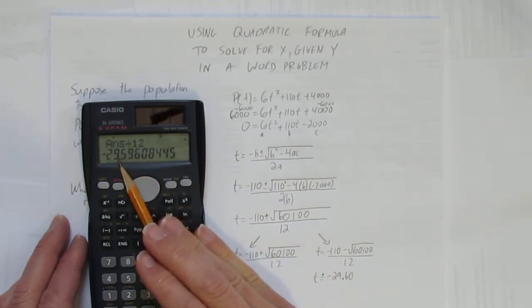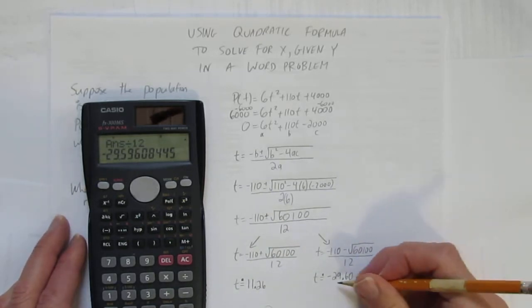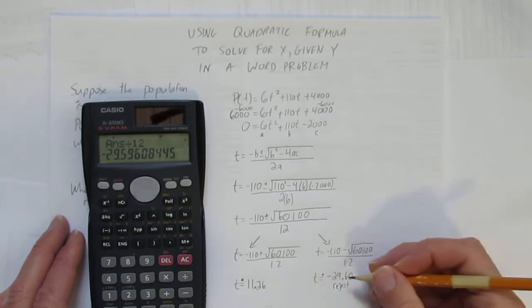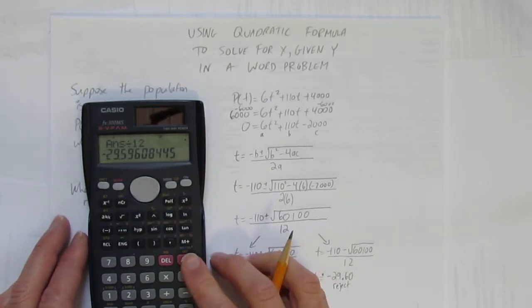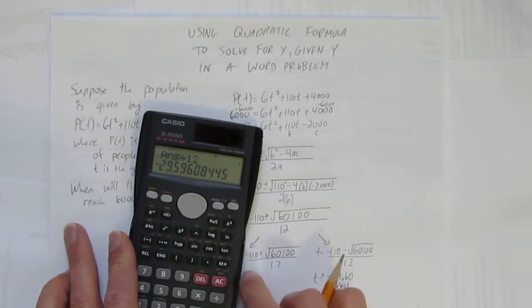I'm gonna reject that one. I write the word reject or inadmissible because you can't have negative time in a word problem. So the only answer is gonna be 11.26. t is the time in years.